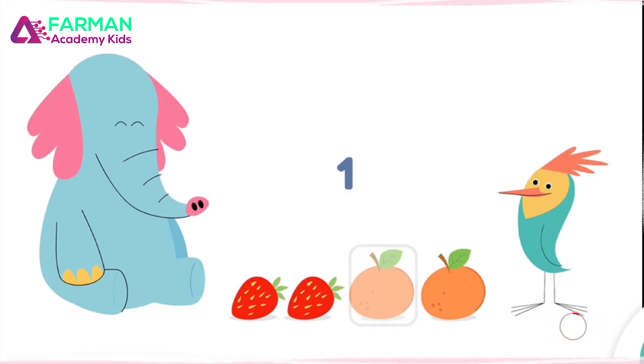Now count the oranges. One, two. There are two oranges. Now count all the fruit. One, two, three, four. There are four fruit all together.